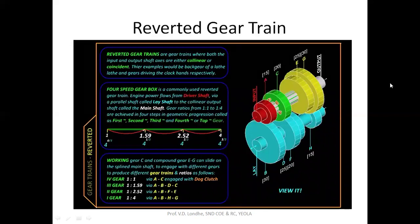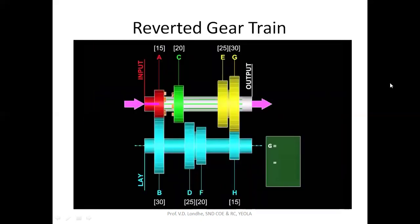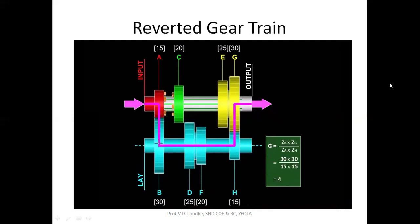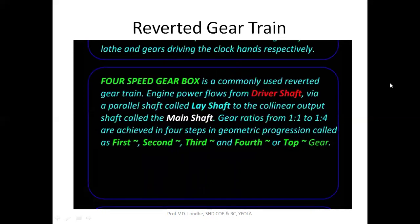In a reverted gear train, the input and output shafts are collinear or even coincident, and power is transmitted via a third shaft parallel to both. In the automobile example, the input shaft shown in red and the output shaft shown in gray are collinear. Power flows from the engine to the input shaft, takes a detour via a gear pair to the lay shaft, and through another gear engagement returns back to the output shaft.